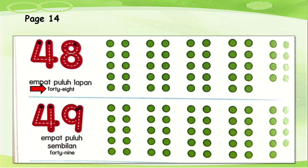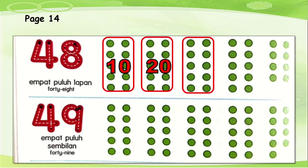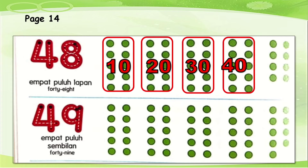F-O-R-T-Y-E-I-G-H-T. 48. Very good. Now let's count the circles: 10, 20, 30, and the last one will be 40. Now let's count the balance: 1, 2, 3, 4, 5, 6, 7, 8. So very good, we have 8. 40 and 8 together will be 48.